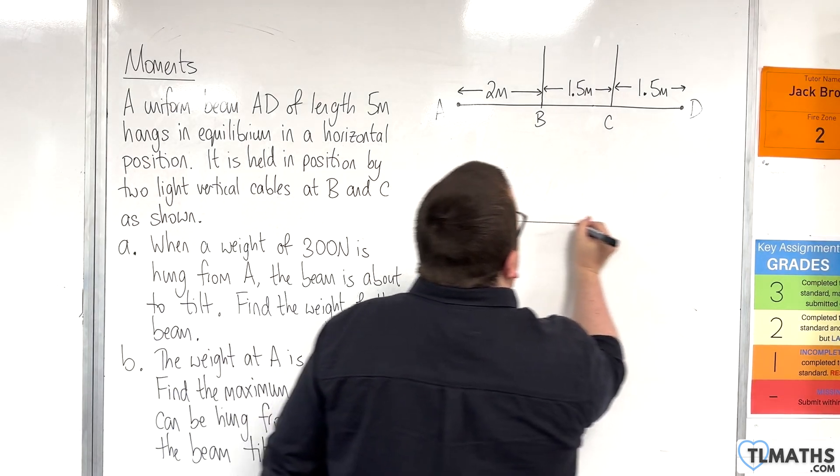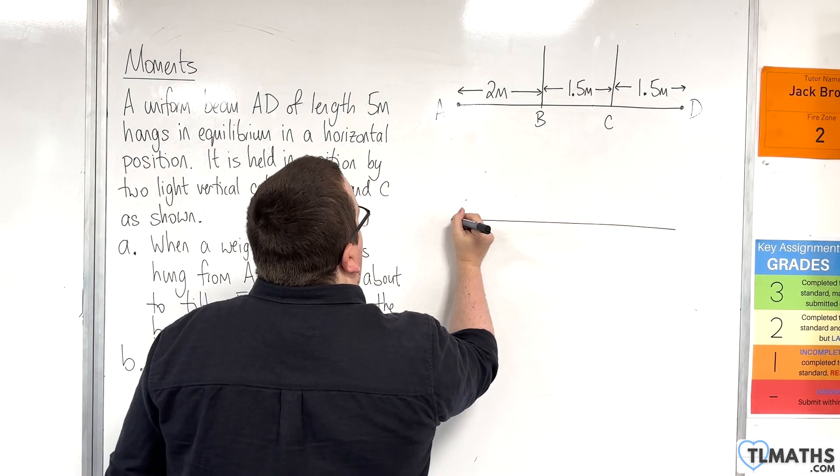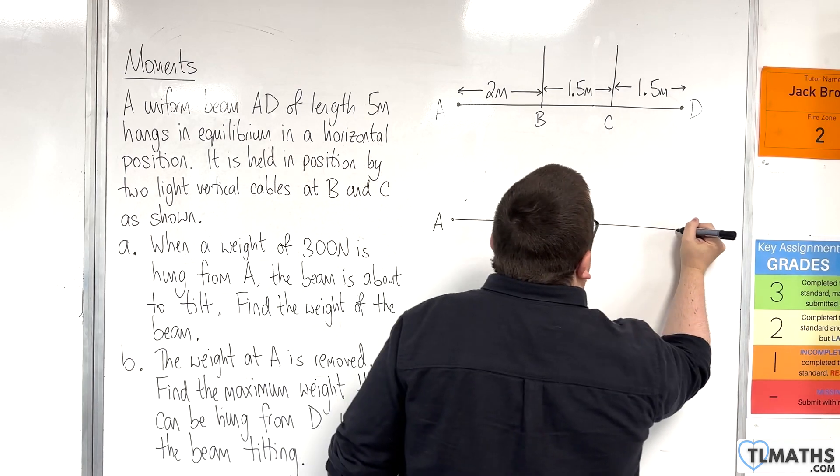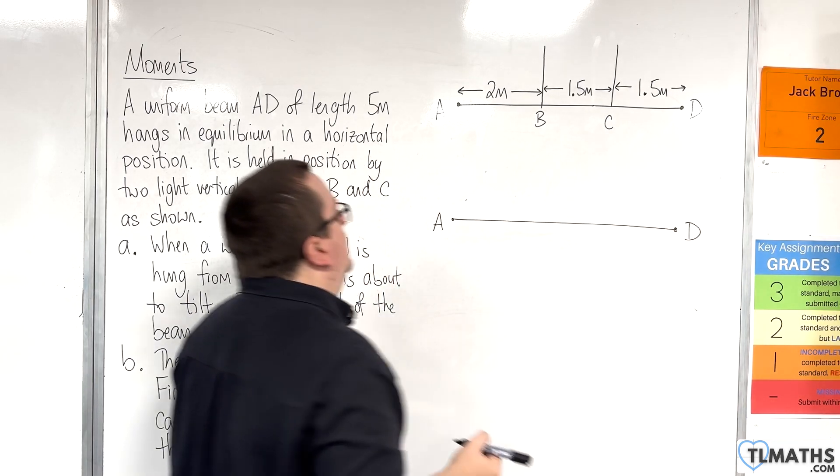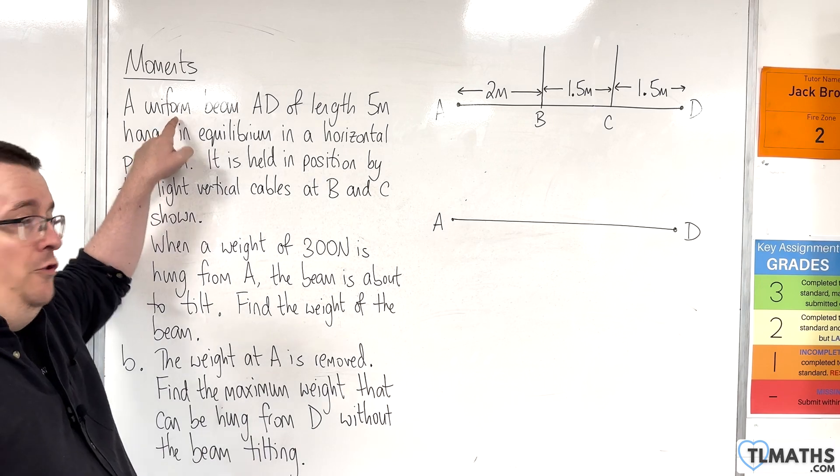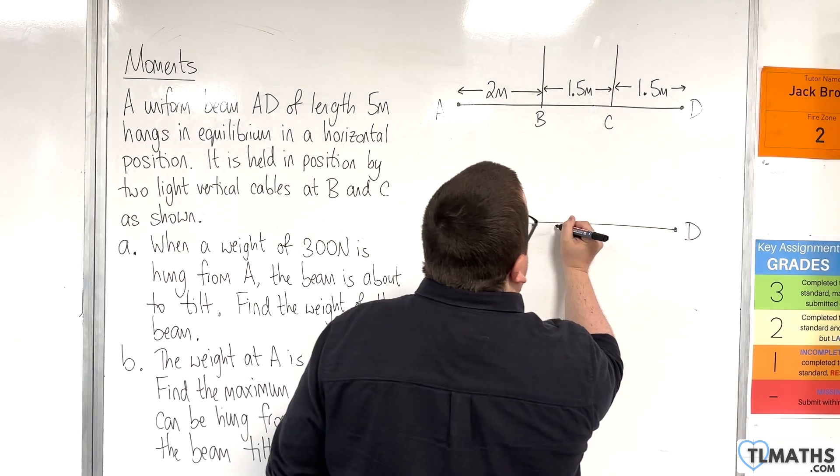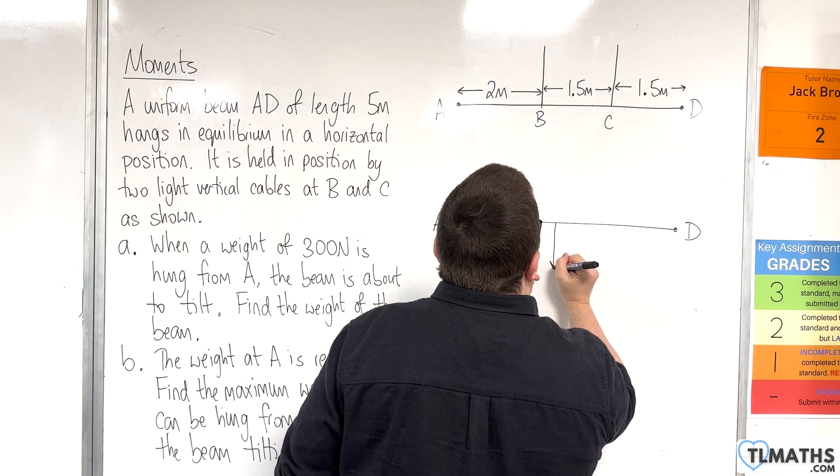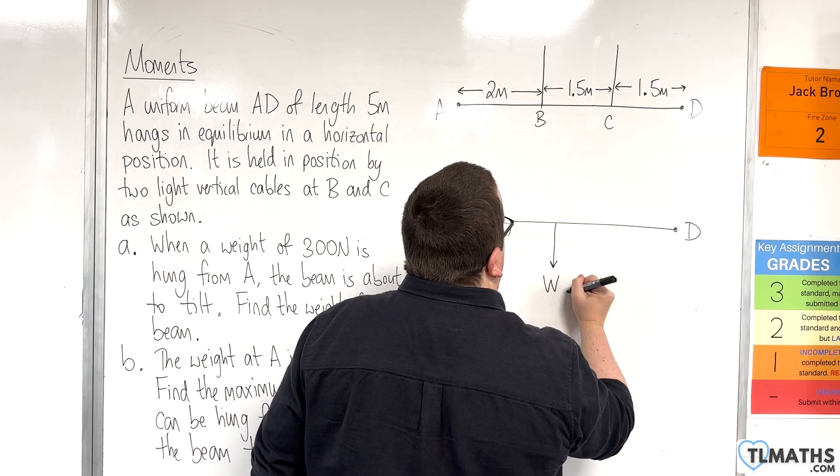So here is my beam, here is A and here is D. Now because we know that the beam is uniform, that means that the weight acts through the centre. So let's call that W newtons.